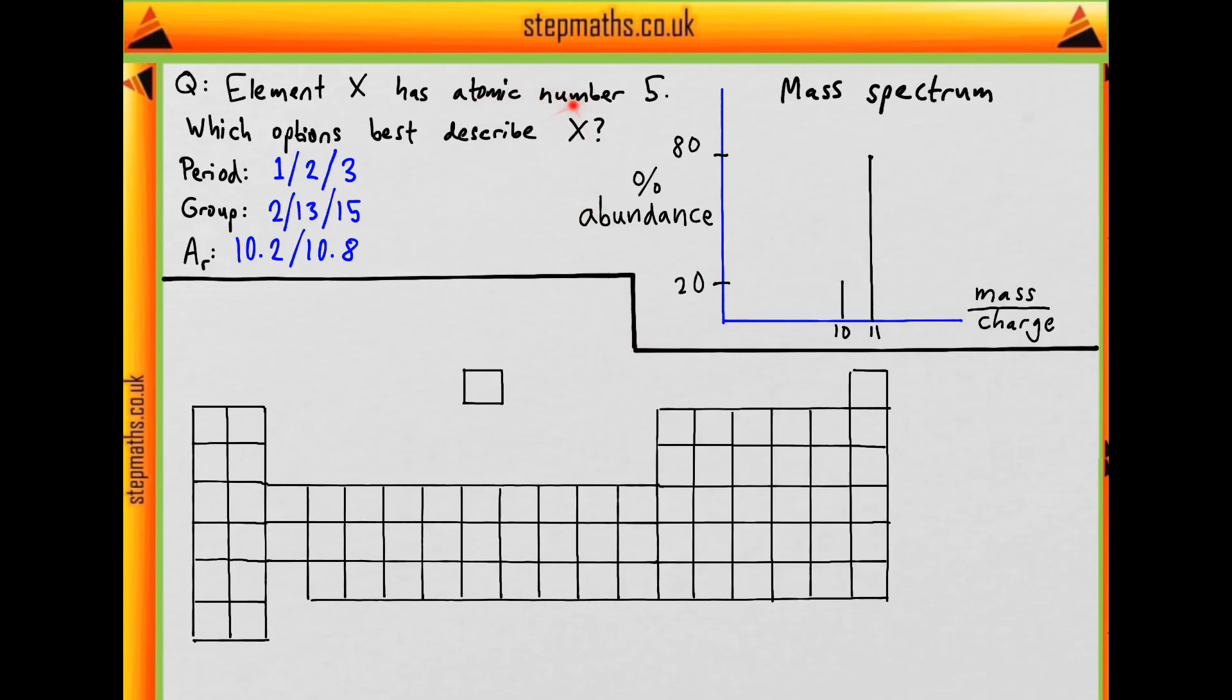If we fill in the first 5 elements, we'll be able to see whereabouts X is. We have the numbers 1 to 5, which are the atomic numbers—the number of protons and electrons. So element X must be here.